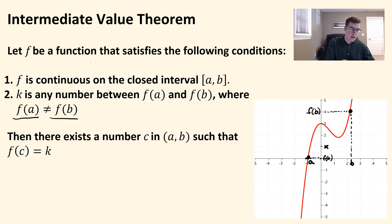then what I'm saying is there lies some value or some number c in that interval from a to b, where if you took f of c, you'd get k. And you can see that happens right here.